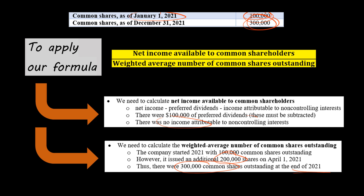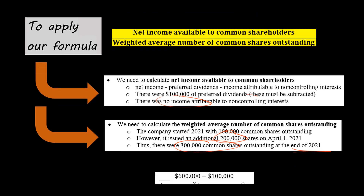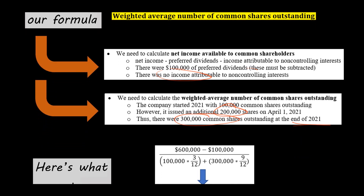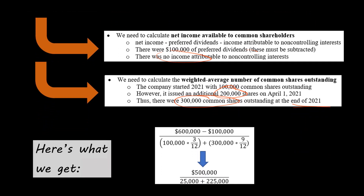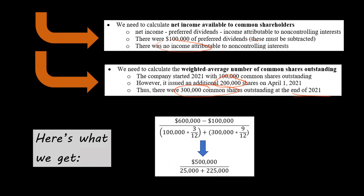So for January, February, and March — three out of the 12 months of the year — there were 100,000 shares outstanding. But for the other nine months of the year, there were 300,000 shares outstanding.